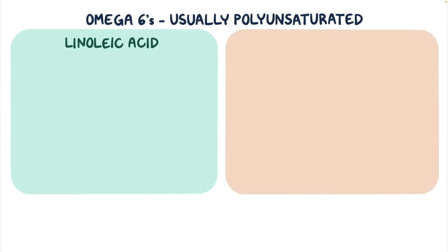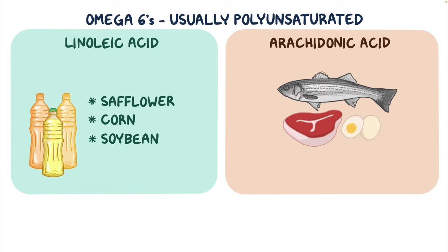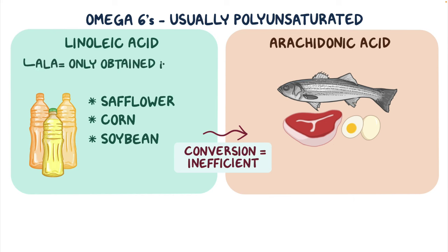Omega-6 fatty acids are also usually polyunsaturated and include linoleic acid and arachidonic acid. Linoleic acid is found in oils like safflower, corn, and soybean oils. Arachidonic acid is found in animal sources like fish, meat, and eggs. Our bodies can convert linoleic acid into arachidonic acid, but once again the process is inefficient. Because ALA and linoleic acid can only be obtained in the diet, they're considered essential fatty acids.